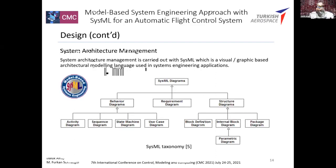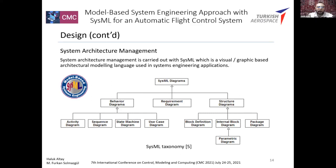System architecture management is the second main component. Systems engineering management is carried out with SysML — Systems Modeling Language — similar to UML in computer science, which is a visual graphic-based architecture modeling language used for systems engineering applications. The system has a grammar and vocabulary just like any natural language such as English or Japanese. Models are created to develop system architecture with SysML, and are examined under three main titles: structural, requirements, and behavioral.